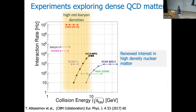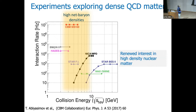There is STAR's beam energy scan — starting at 200 GeV and coming down to around 7 GeV, with a fixed target going down to 3 GeV. There is NICA in Dubna, the SPS at CERN with NA61 and NA60+, and HADES running at GSI up to 2 GeV. The experiment I am going to talk about is the Compressed Baryonic Matter experiment at the FAIR facility, driven by renewed interest in high-density nuclear matter.